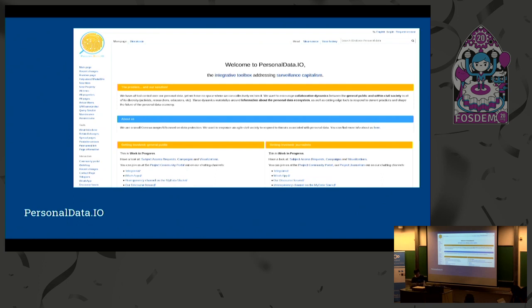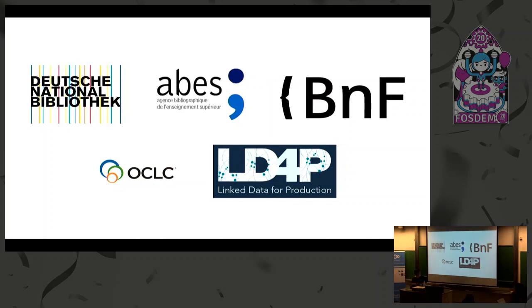Or we have a Wikibase instance called personaldata.io — they are trying to do something about surveillance capitalism by helping people have conversations about it, by exposing how personal data is used, and by connecting organizations that fight against it and provide alternatives. A very worthy goal. And to sum up the showcases, we are currently working with a lot of national libraries — for example the German National Library and the French National Library — as well as some library groups, trialing Wikibase as a system for their own internal cataloging systems.